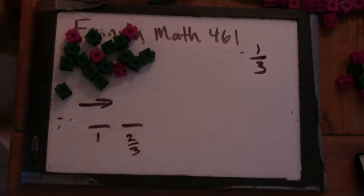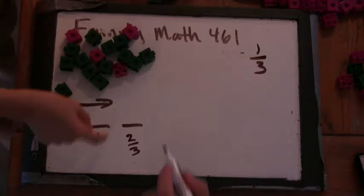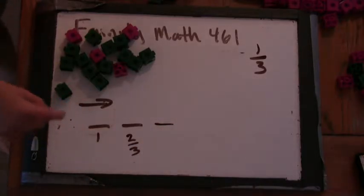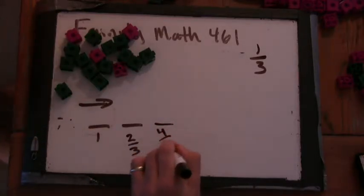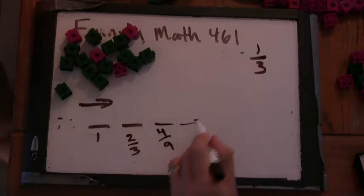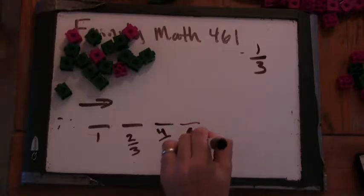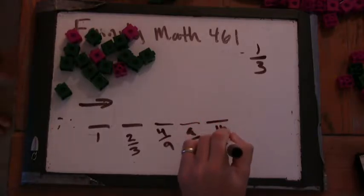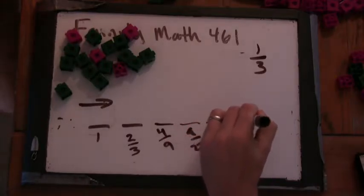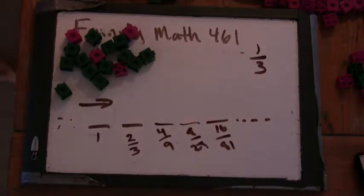And what's the next digit? That would be 4 ninths. 4 ninths. And 8 twenty-sevenths. 8 twenty-sevenths. 16 over 81. And let's see if we can figure out how we're going to make this equal to one-third.